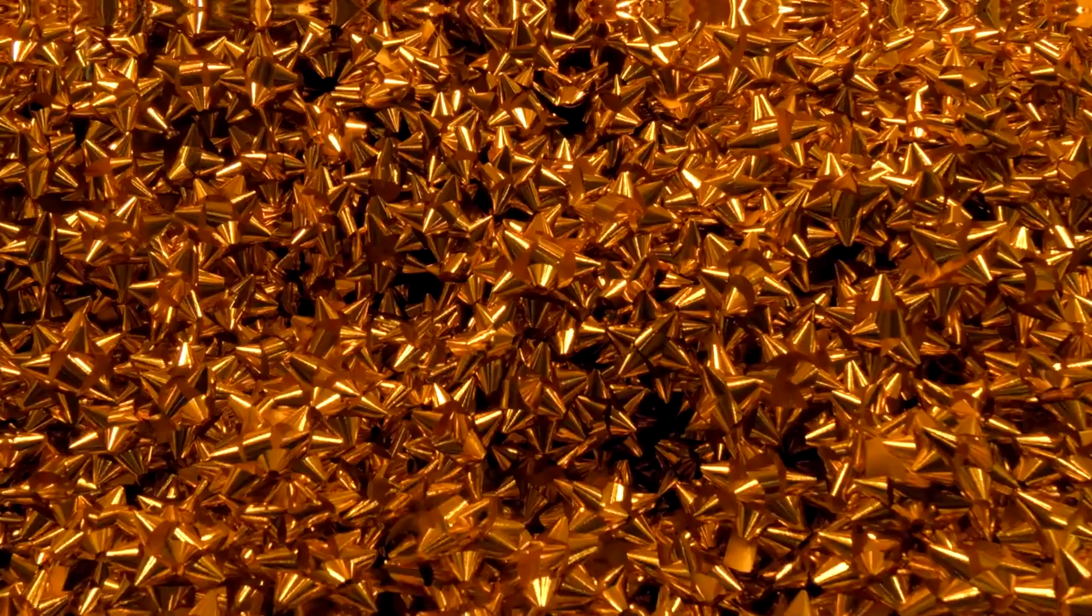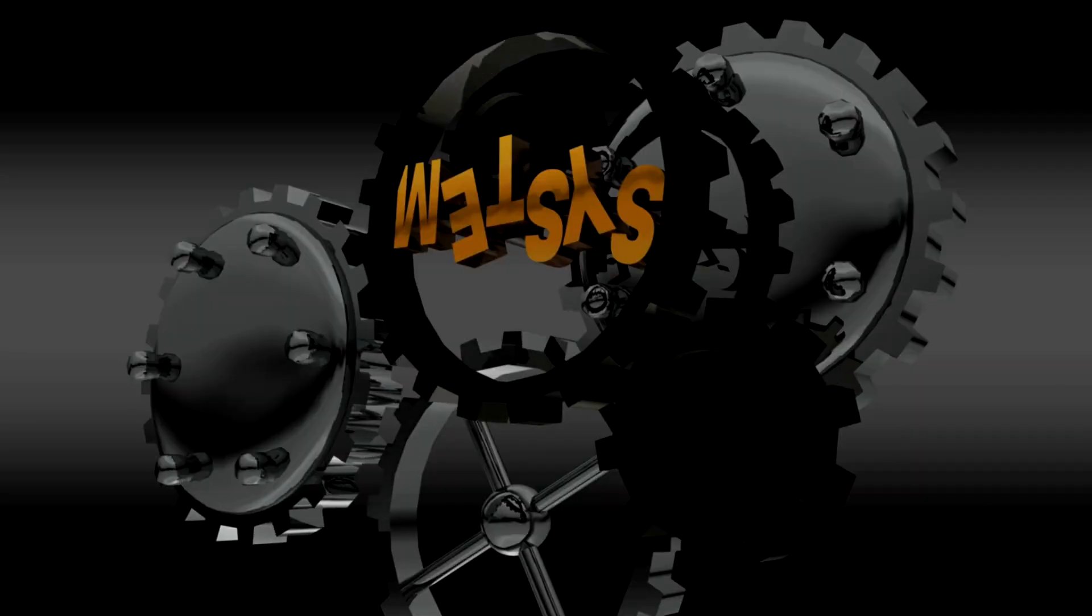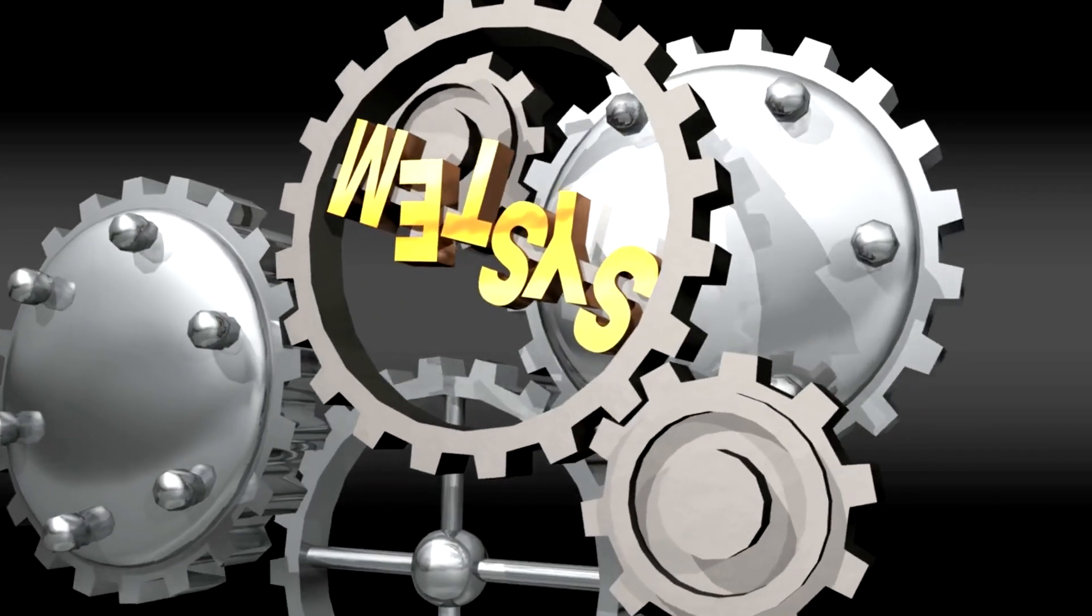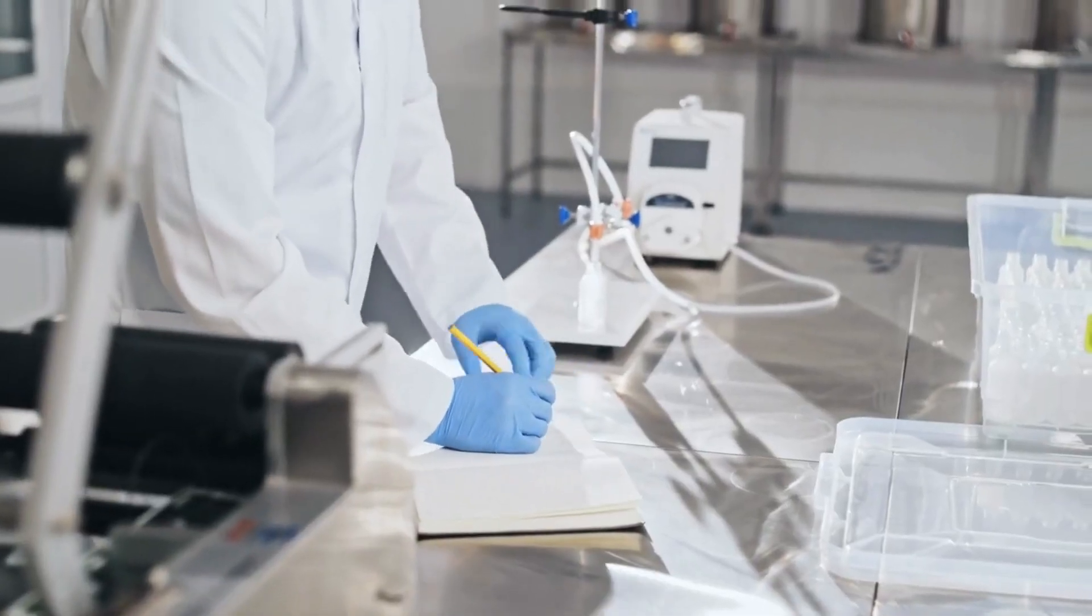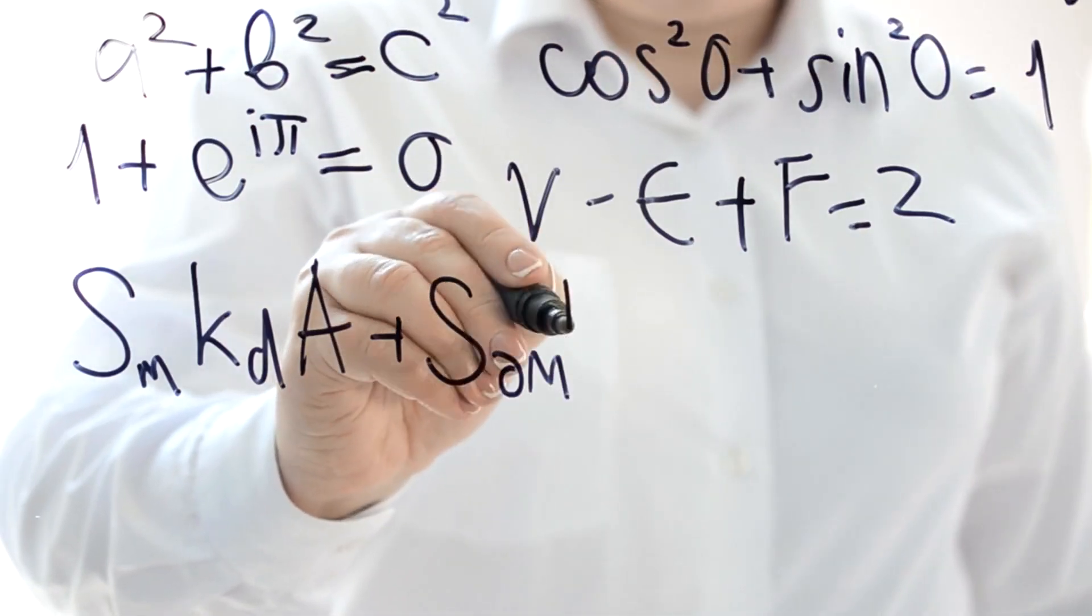It suggests that the mathematical models we employ to describe physical systems might be more fundamental than the systems themselves. Moreover, different physical systems could be observationally equivalent if they share the same underlying mathematical structure.